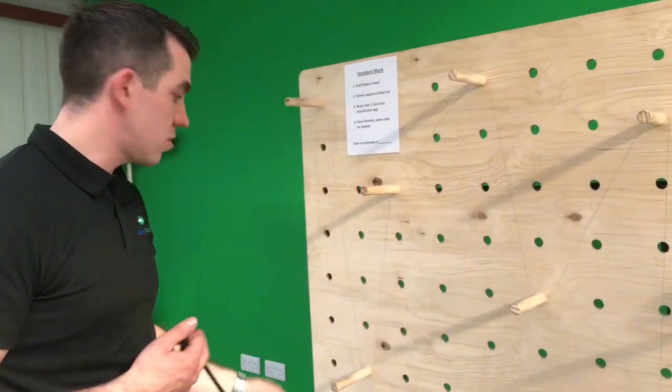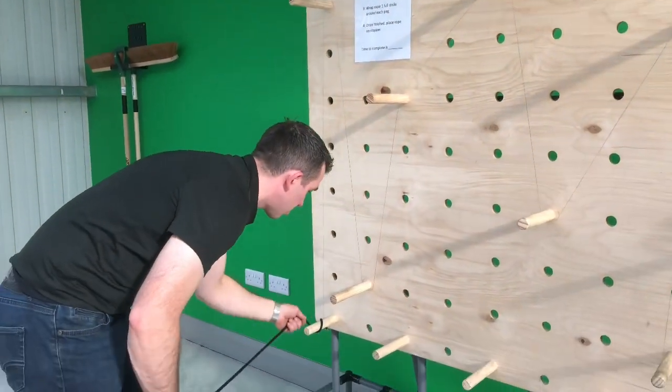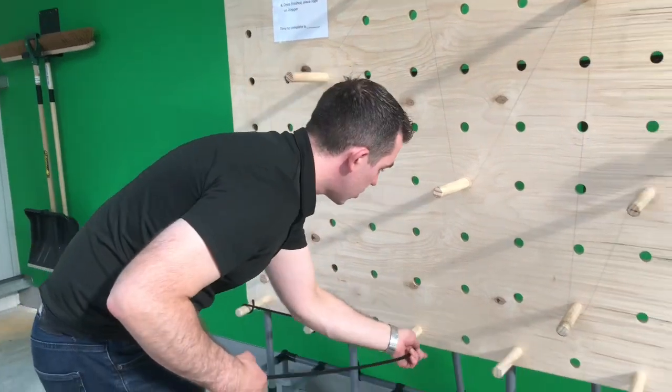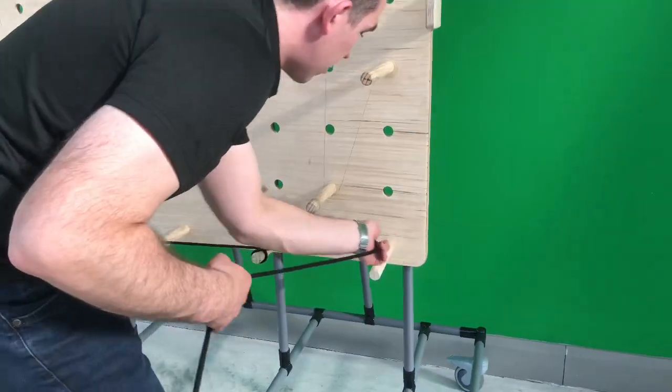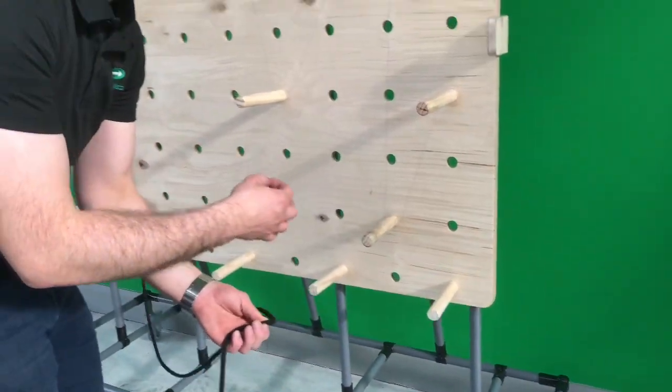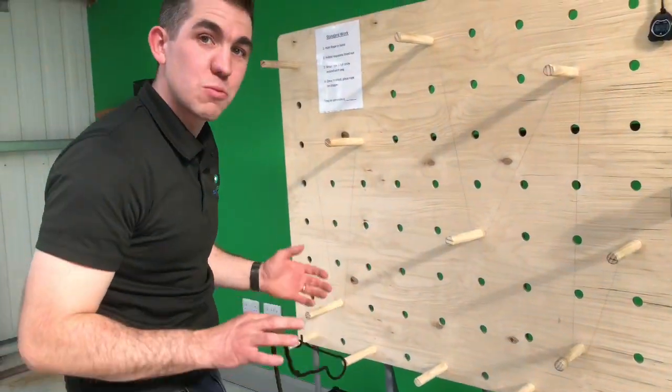For us to make an improvement, we could use this. This could be one, two, three, four, five. So the value is the same, but the non-value has reduced massively. Look at the length of the rope.